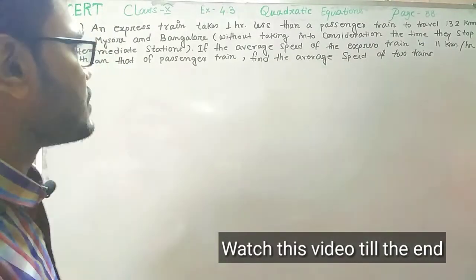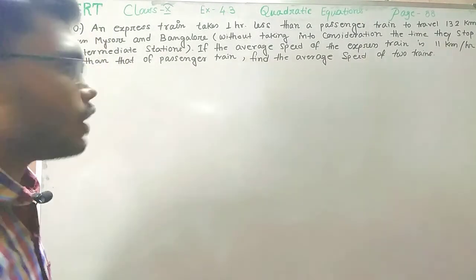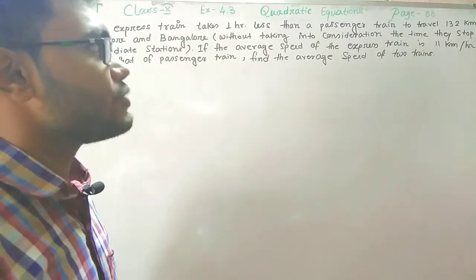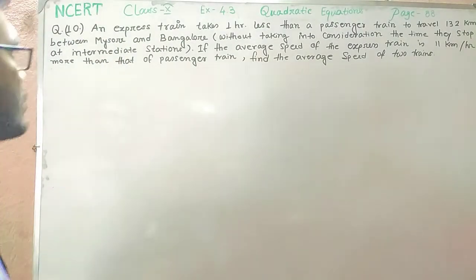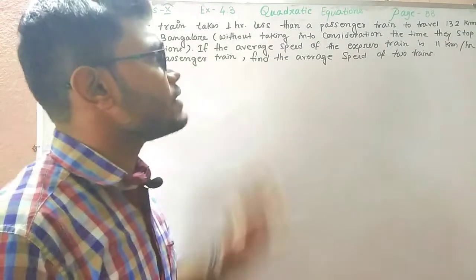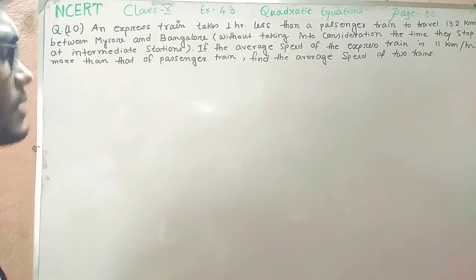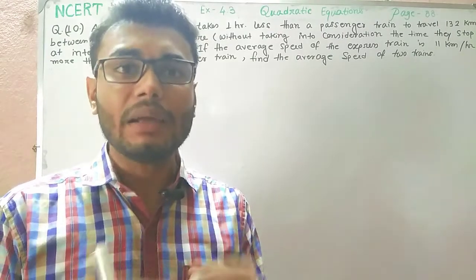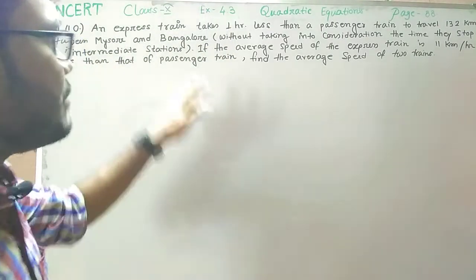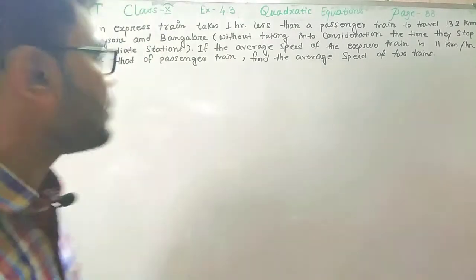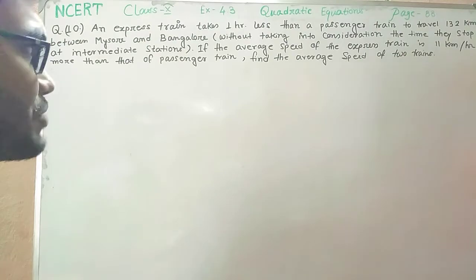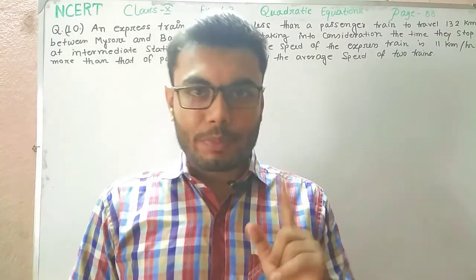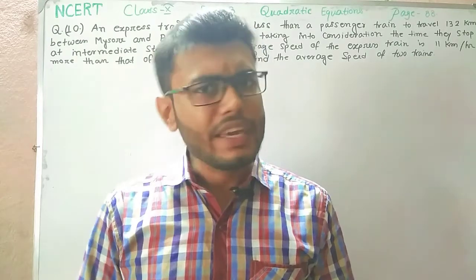We are about to finish this exercise. First of all, I am reading out the question as I always do in my other videos. An express train takes 1 hour less than a passenger train to travel 132 km between Mysore and Bangalore, without taking into consideration the time they stop at intermediate stations. If the average speed of the express train is 11 km per hour more than that of the passenger train, find the average speed of the two trains. So, what are the two quantities we have to find out? One is the speed of the passenger train and second is the speed of the express train.